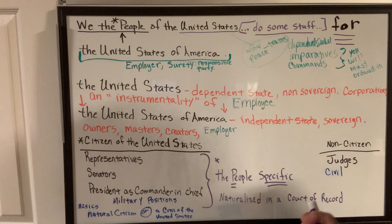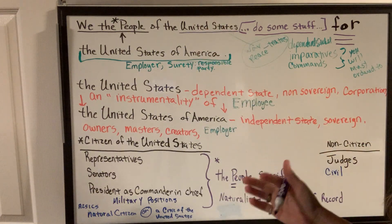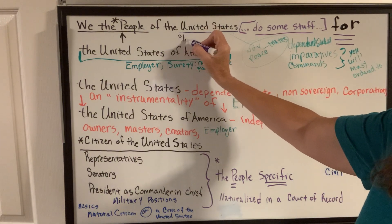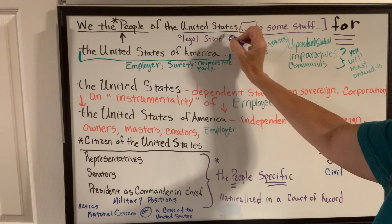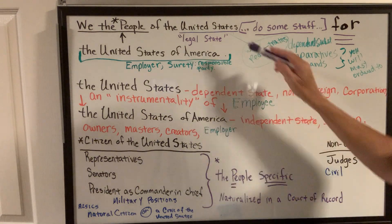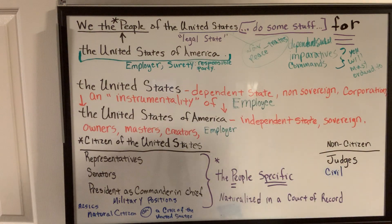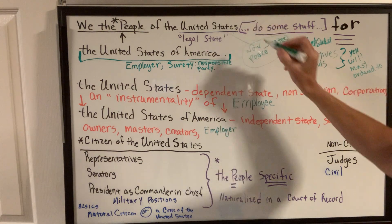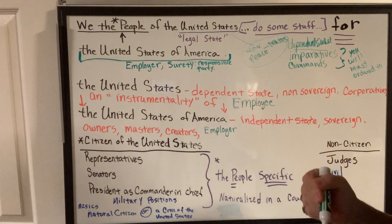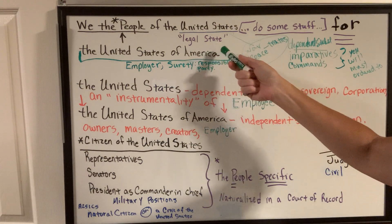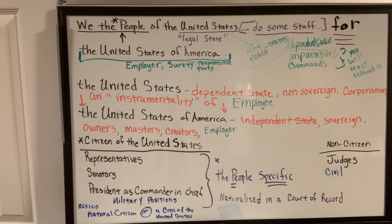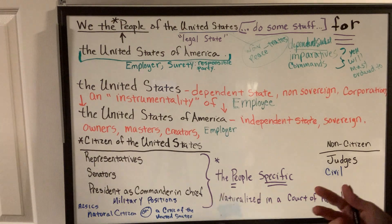Then Lincoln came in, and after the Civil War, when the country was basically ravished, he created something called a legal state. It looks just like a regular state, looks just like the employer-employee relationship, but it's not. It has no actual sovereignty. In reality, it's a dependent state created by the United States — an instrumentality — that has actually nothing to do with us, even though now we have birth certificates that, once you fill them out, you're filling out a form to create a legal entity.